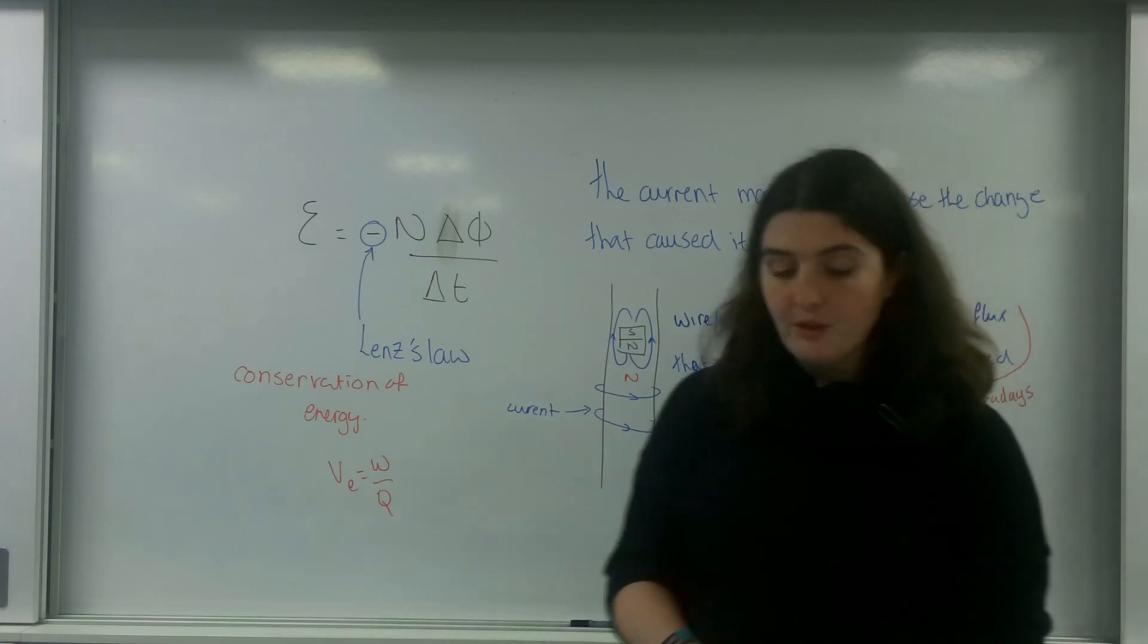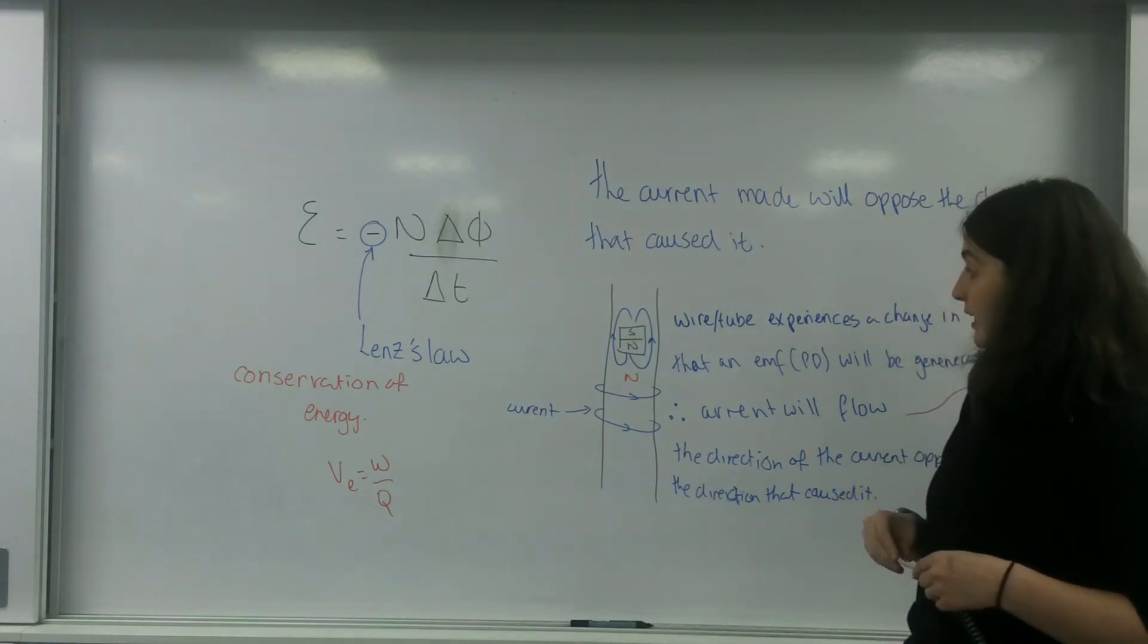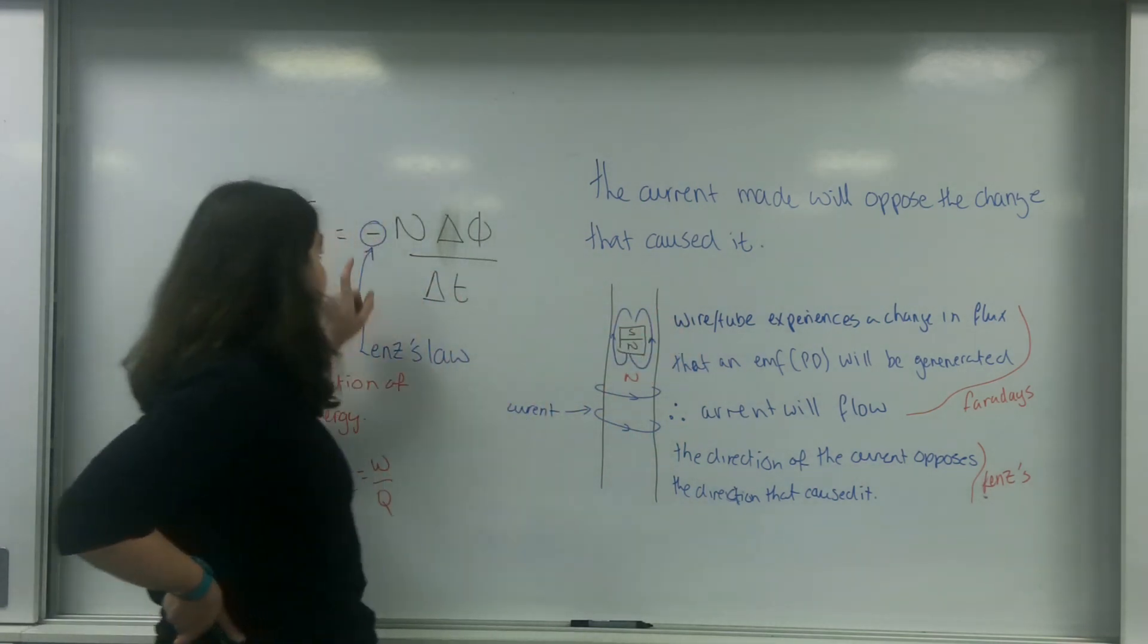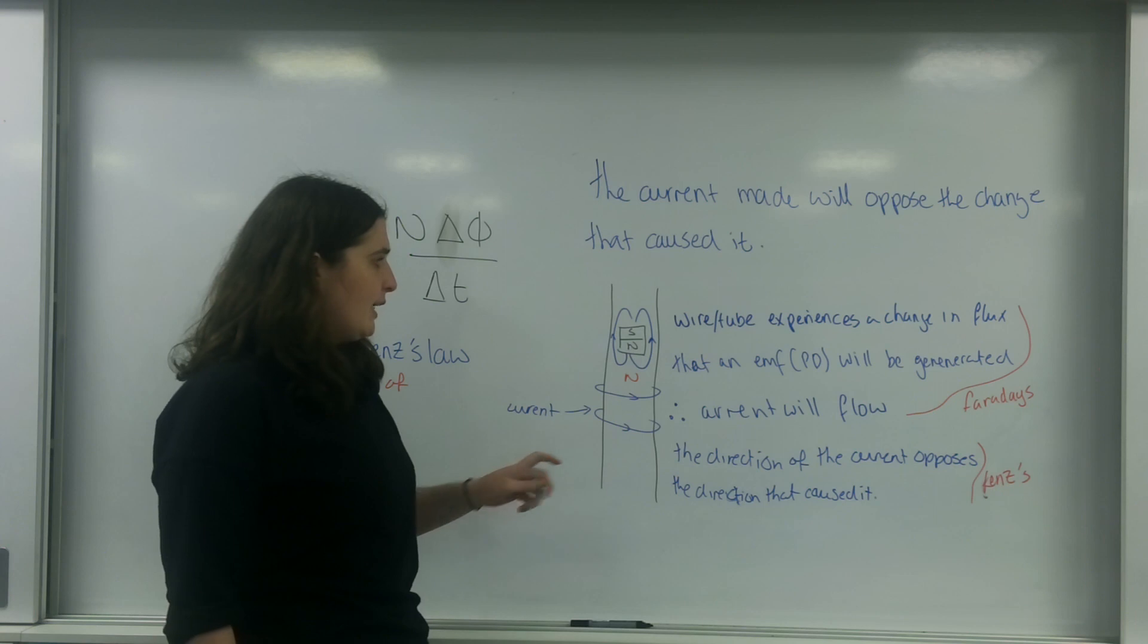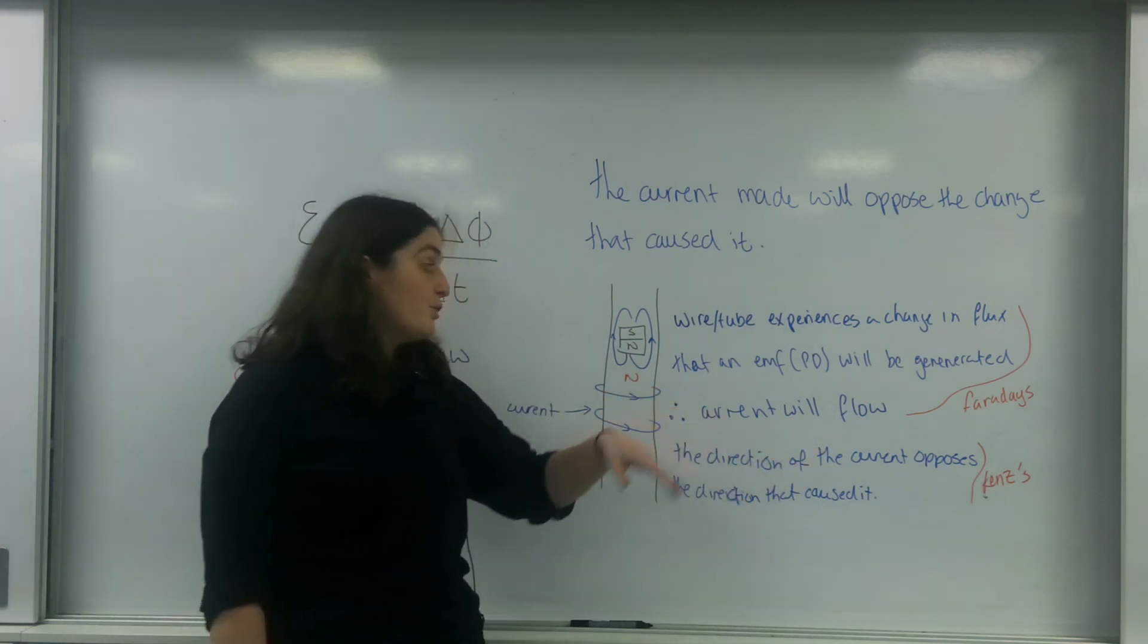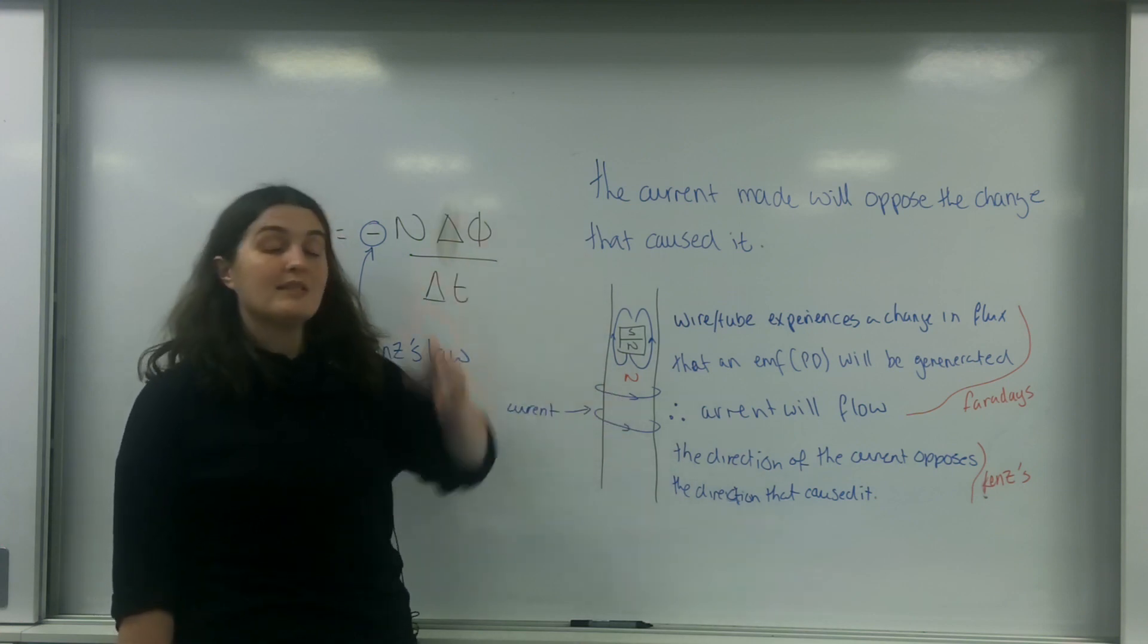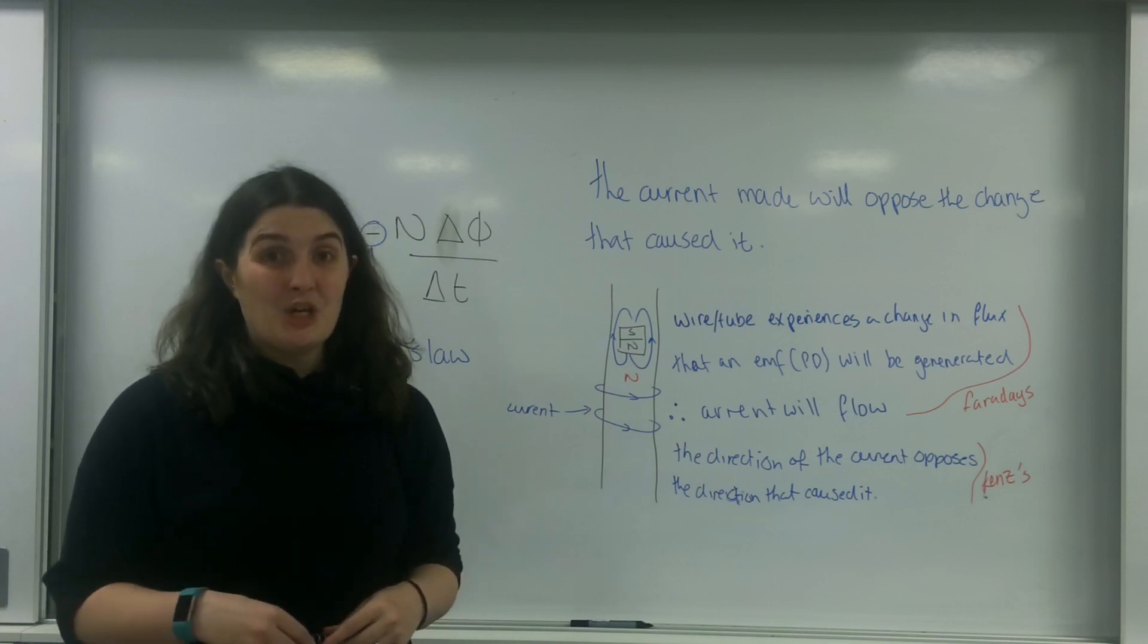For Lenz's law for exams, you need to understand that Lenz's law basically means that the current made will oppose the change that caused it. And what I've done here is I've written quite a bit explaining what's happening here, that the wire tube exposed to change in flux - and that's important because that's Faraday's - that an EMF will be generated or a potential difference, an electric field will be made, which will mean current will flow. The direction of the current will oppose the direction that caused it. This idea that the current will make a magnetic field that opposes the magnetic field that just caused it, which means it takes energy away from it.